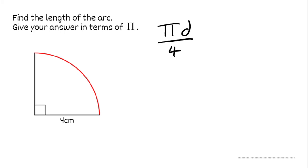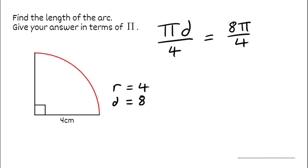Let's substitute these values in. We don't have the diameter — looking back at the question, we're actually given the radius. The distance from the centre to the circumference is 4, so the radius is 4, which means the diameter would be double: 8. So we've got pi times the diameter — that's 8 pi — divided by 4, which simplifies to 2 pi. Our final answer is 2 pi centimetres, as the radius is in centimetres.